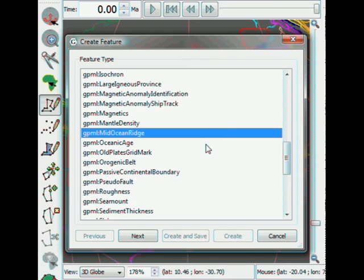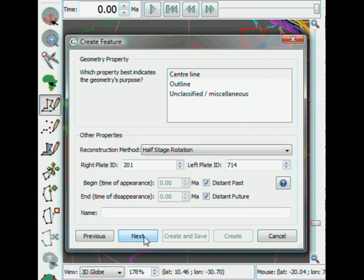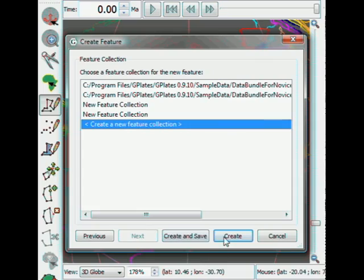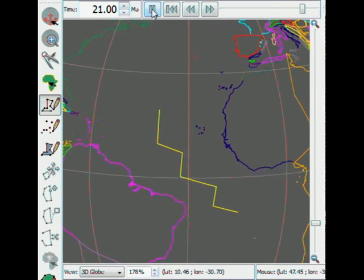There is a new half-stage rotation reconstruction method. Use this with mid-ocean ridges to have them move with respect to a left and a right plate.